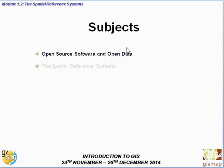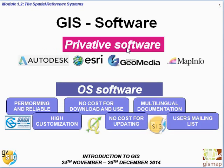First of all, let's have a quick overview about open source software and open data. There are several GIS software available in the market or on the web. There are private software such as Esri and Geomedia. There is also open source software that is performing and reliable. It can be highly customized, has no cost for download and use, no cost for updating, has multilingual documentation and active user mailing lists. Among them there is also GVSIG, which is the software we are going to use in this course.